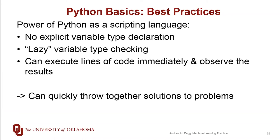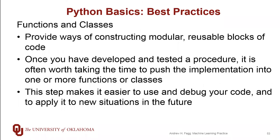Another benefit of the scripting language is that we can type in lines of code and execute them immediately to see what happens. This set of properties allows us to very quickly put together bits of code to test ideas out without having to do a lot of the heavy lifting of going through compilation steps and organizing complicated code implementations. However, as you start to develop more comprehensive solutions, we want to start to build abstraction into our code, and this is where our functions and object classes come into play.